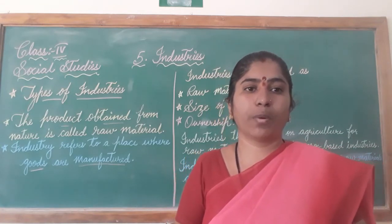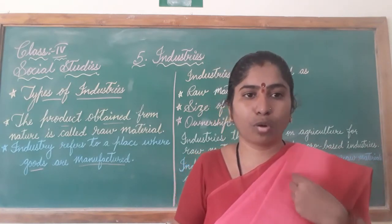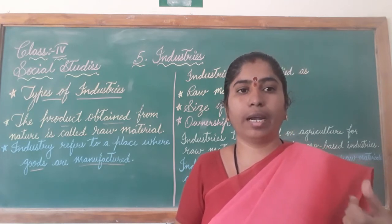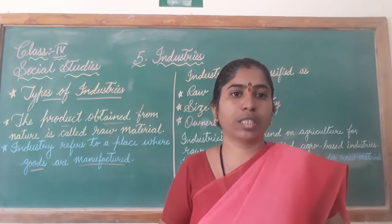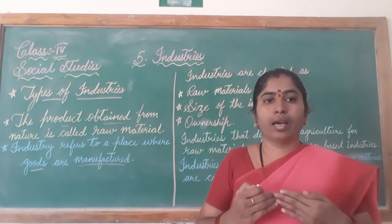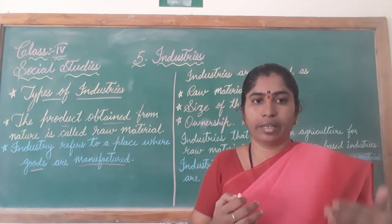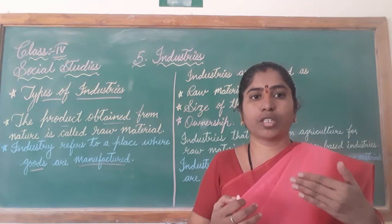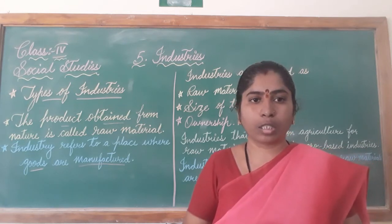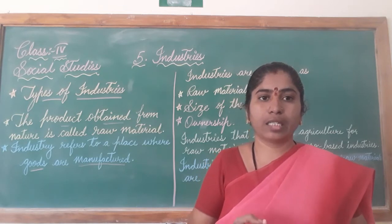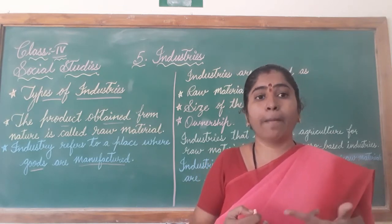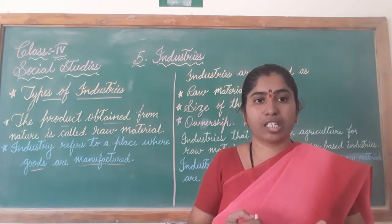Other varieties of products are textiles - the clothes which we wear. You get cotton and wool, which are natural things. Then these are made into yarn, processed further, and you get ready-made clothes. Textiles are one of the products we get from industries.